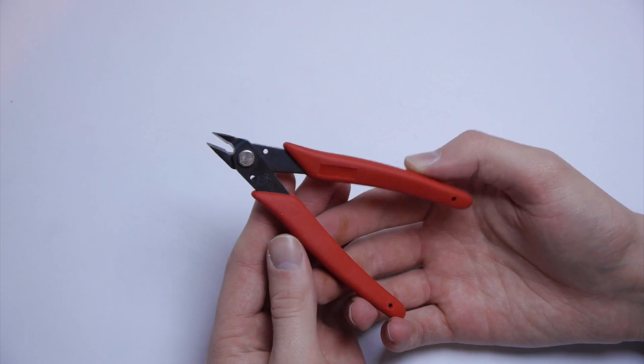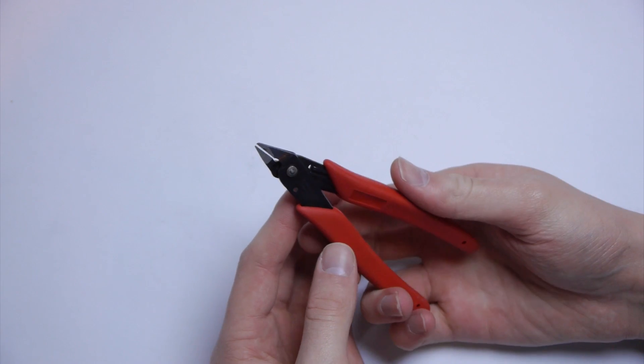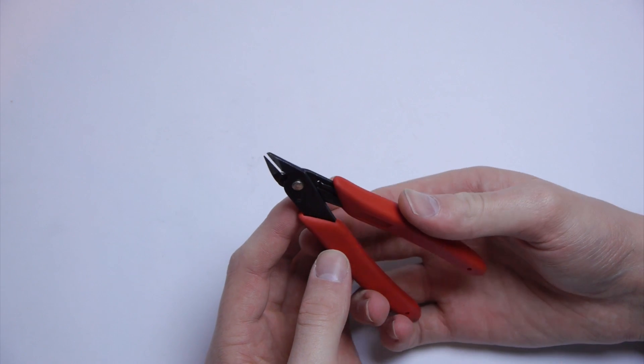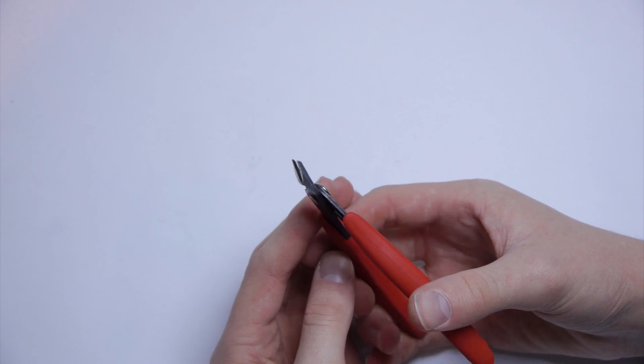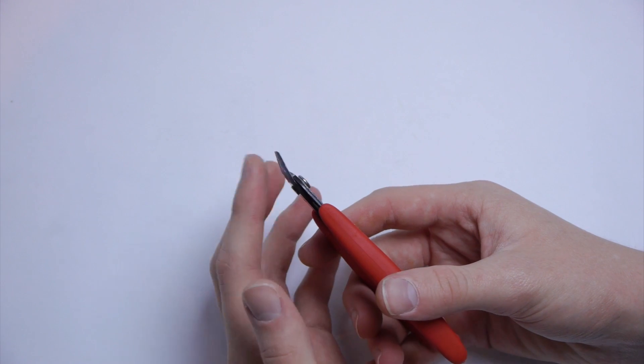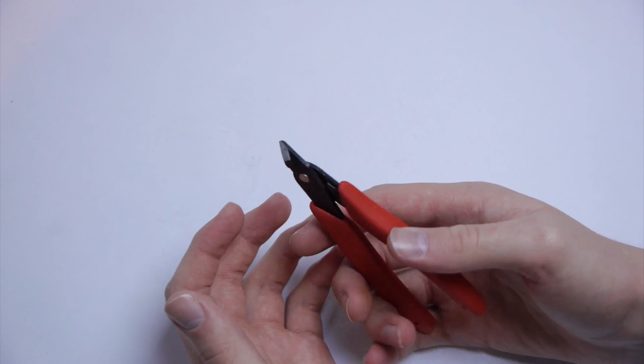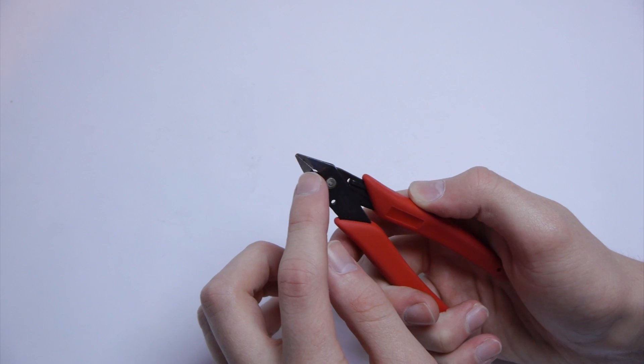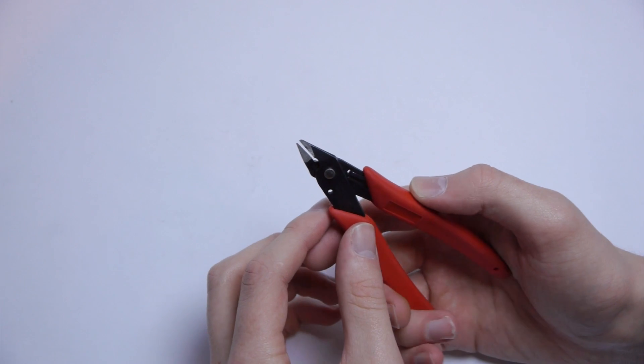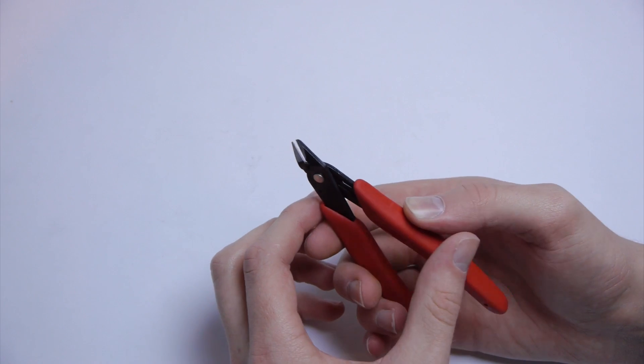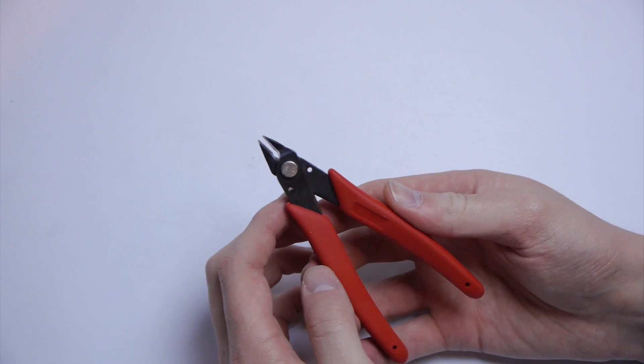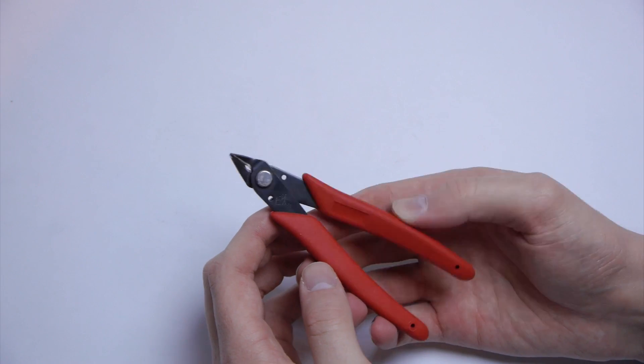Flush cutters are an important tool. They're used for many things. As the name suggests, they cut things very flush to the end of the cutters. As you can see, there's a flat part here. They're very useful for cutting zip ties and smaller wire very precisely. These are only like $10.